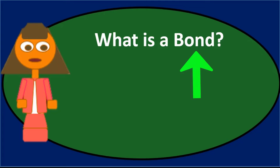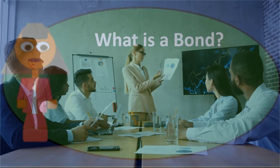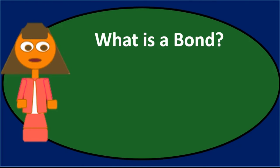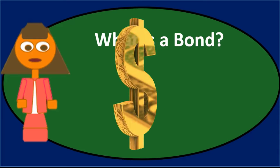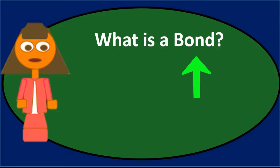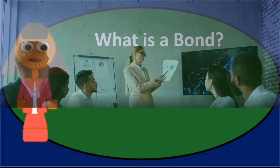A bond is very similar to a note in that the idea is we are trying to finance the company. As the issuer of the bond, we issue bonds to finance the company — we receive payment and give a promise to return the principal plus any interest stated on the bond. Bonds are usually in denominations of one thousand dollars or five thousand dollars per individual bond, and we can group and sell multiple bonds at particular times.